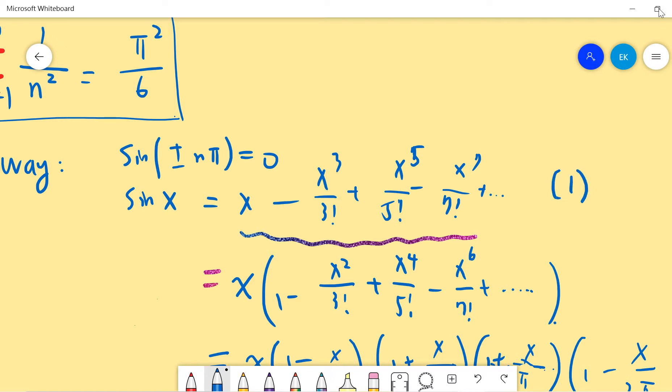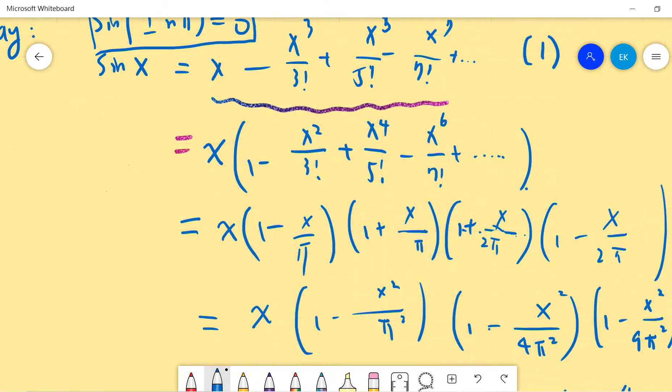And then we know that the sine at integer π values will be 0. So basically we will have sin(0) equals 0, sin(±π) equals 0, sin(±2π) is 0. So we have this second one.